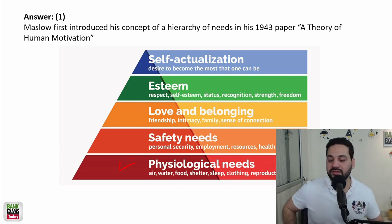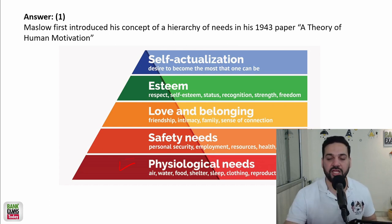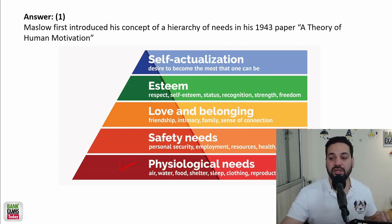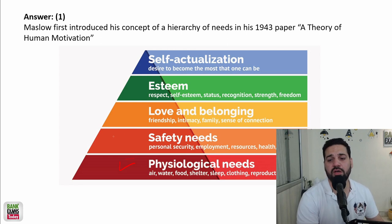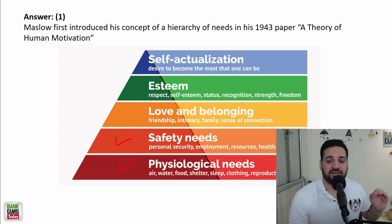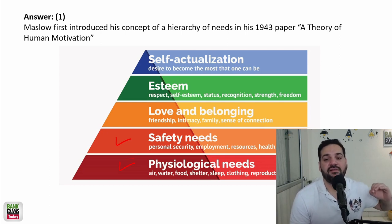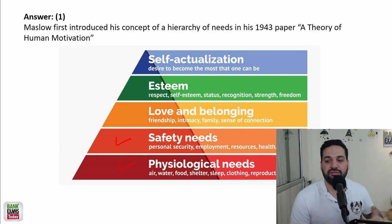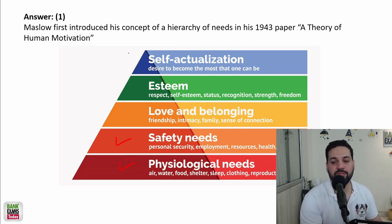Once physiological needs are satisfied, then you need your personal security, employment, and the safety of yourself and your family — those are safety needs. Once safety needs are satisfied, then there is the love and belongingness need: you need friends, family, and a sense of connection.